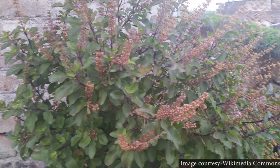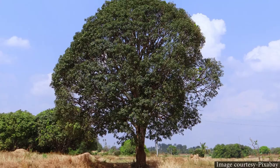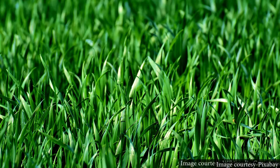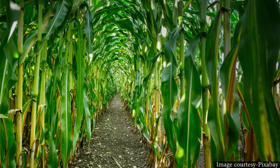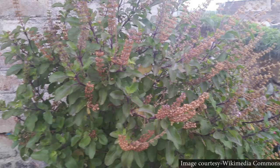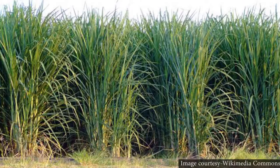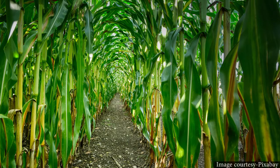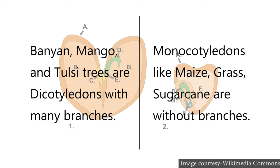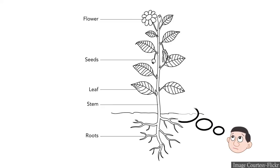From the pictures, you have seen plants that have branches and plants without branches. Tulsi, banyan, and mango have many branches on their stem. On the other hand, grass, sugarcane, and maize stems are without branches. Banyan, mango, and tulsi are dicotyledonous plants with a branched stem system. In monocotyledonous plants like maize, grass, and sugarcane, stems are without branches.